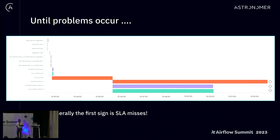Generally, the first sign you know there's a problem is when an SLA is missed, at best. The other case is tasks fail, DAGs fail, and that becomes the first sign of knowing there's a particular problem.